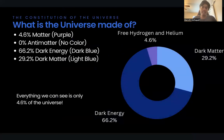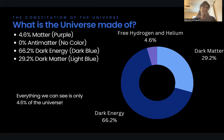What is the universe exactly made up of? It's made of 4.6% matter, which is in the purple color on the graph. It's made of 0% antimatter. The reason why is because antimatter instantly annihilates matter, and so no antimatter would exist. There's 66.2% dark energy and 29.2% dark matter.